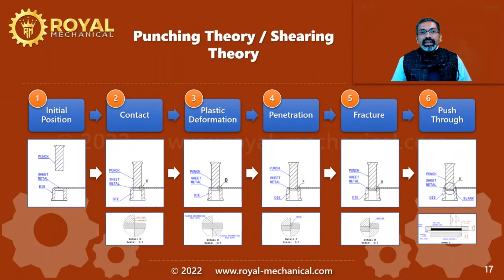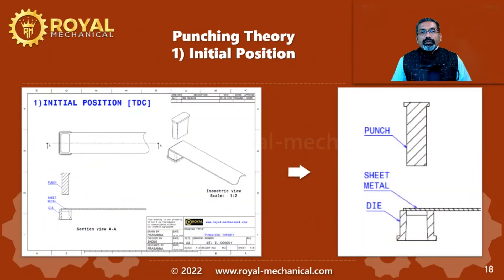Now let me explain each phase in detail. Number one: the initial position. The punch is assembled to the press slide. The raw material, which is a sheet metal, is positioned on the die. The die is assembled to the bolster. The press slide reciprocates up and down, and with every stroke of the press slide, the punch shears the raw material. The initial position is the position of the press slide at top dead center — that is, the press slide is at its topmost position.